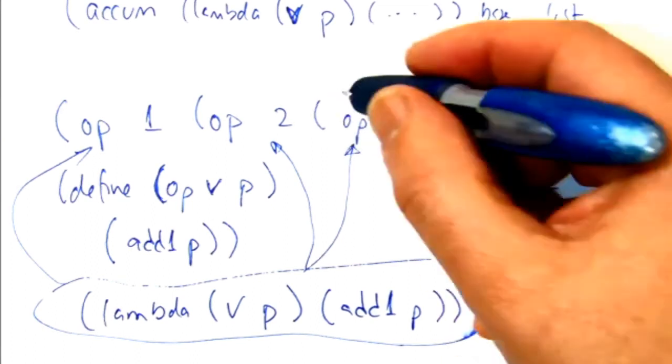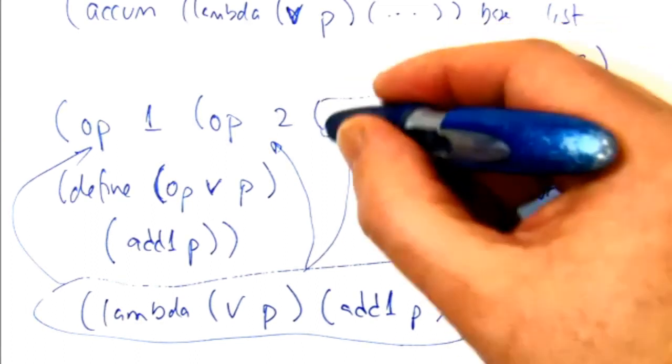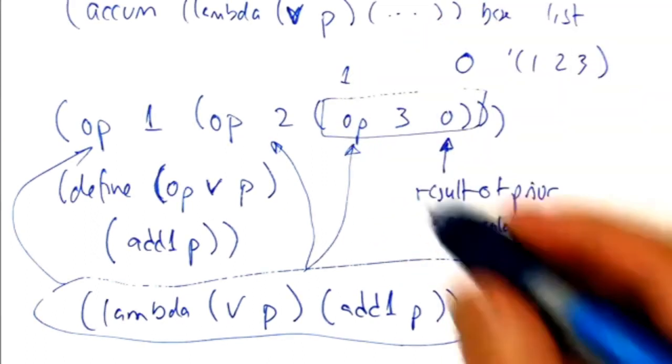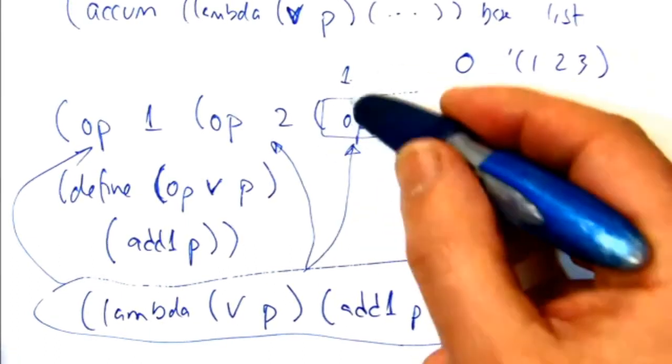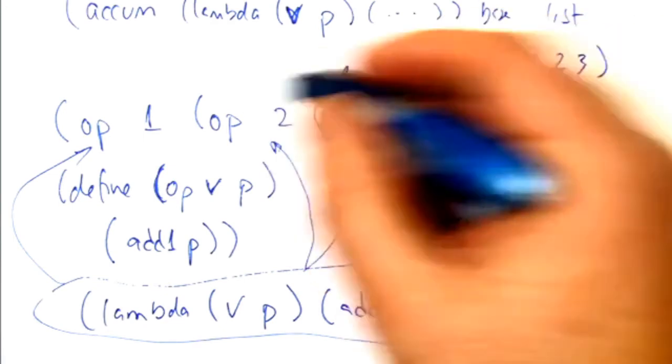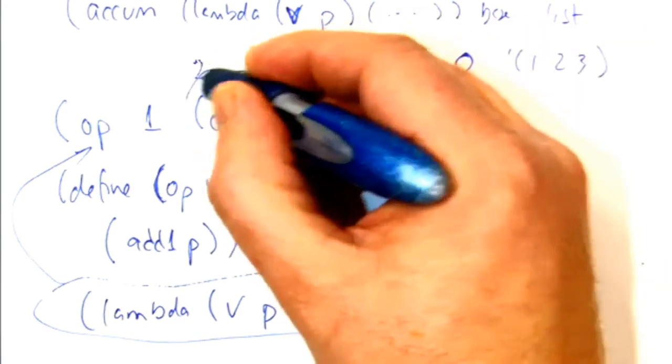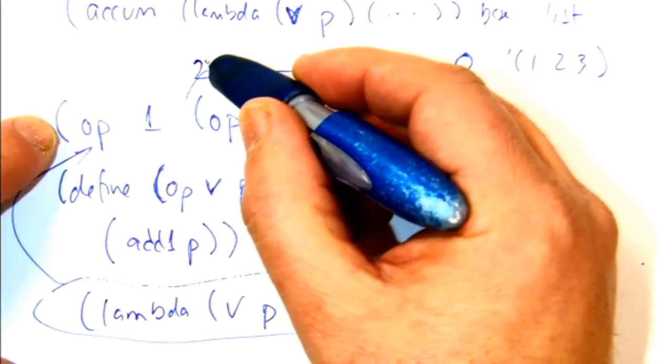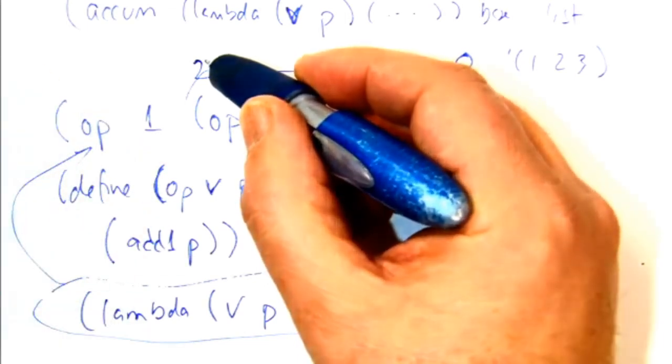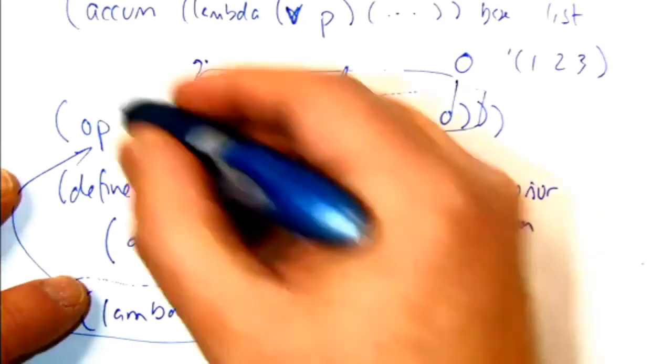So now that produced a one. And now op gets a two and a one and throws away the two and adds one to the one. And so that whole thing then produced a two. And then the last time it operates on one and two, throws away the one, adds one to the two and spits out a three and we're done.